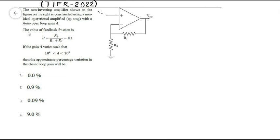The value of feedback fraction is 0.1, and if the open loop gain varies in this range, what will be the approximate percentage change in the closed loop gain?